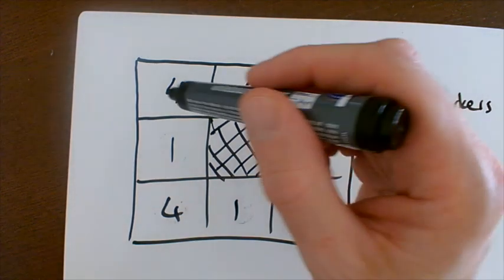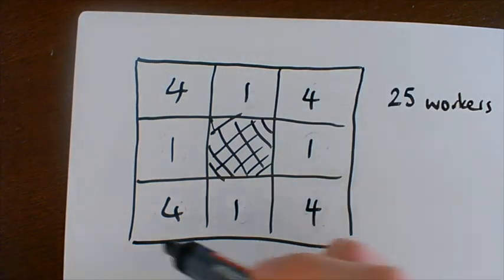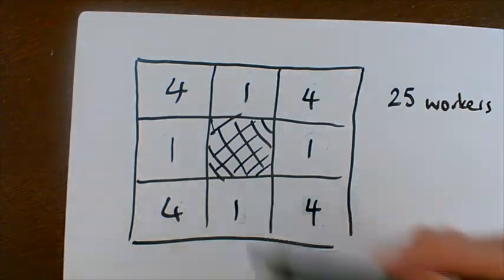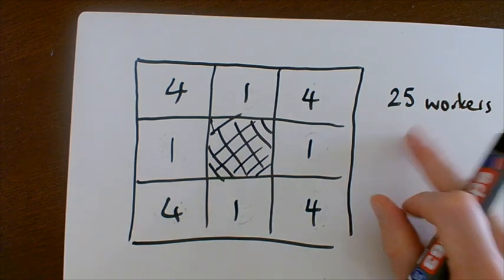So if we check how many workers he's got there, we've got four, eight, twelve, sixteen, seventeen, eighteen, nineteen, twenty. So he's got 20 workers all in but not 25.